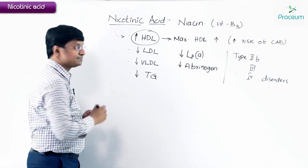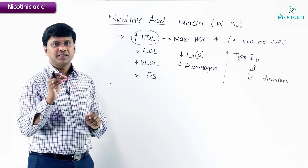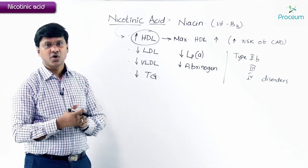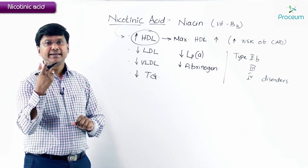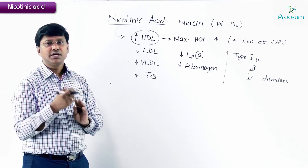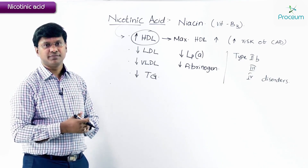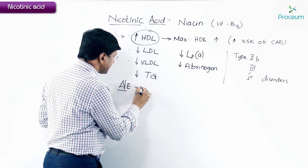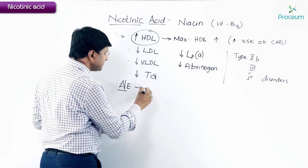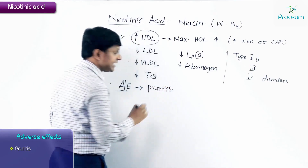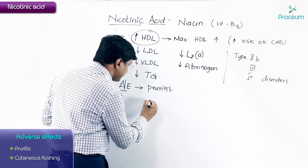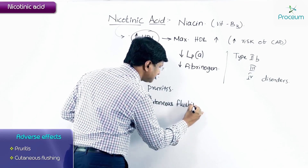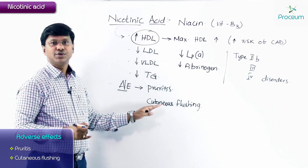The main problem with nicotinic acid or niacin is compliance — compliance is one of the limiting features of this drug. The adverse effects are mainly very severe itching, called pruritus, and cutaneous flushing.